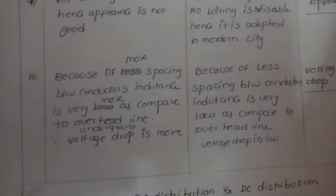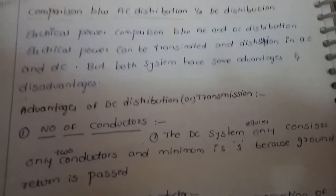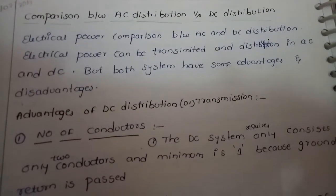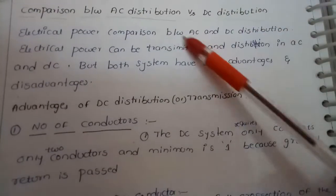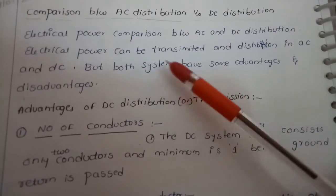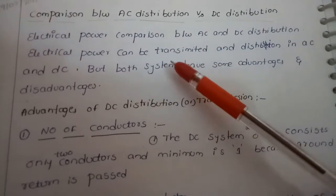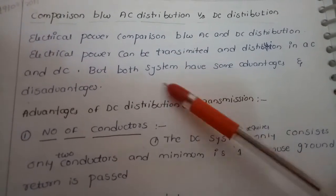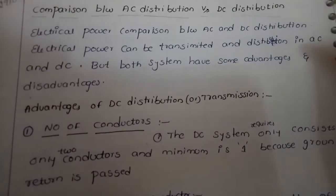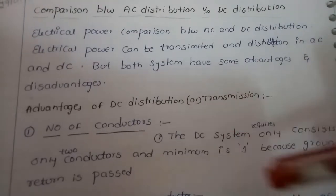Now let us discuss the comparison between AC distribution versus DC distribution. Electric power can be transmitted and distributed in both AC and DC, but both systems have advantages and disadvantages. We will first go through the disadvantages of DC distribution, noting that the advantages of DC are the disadvantages of AC, and vice versa.